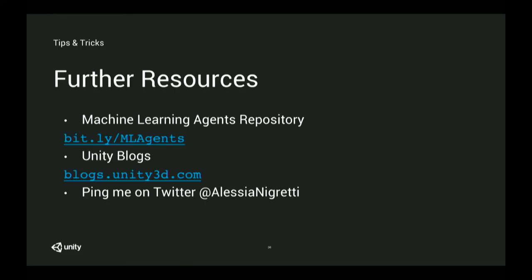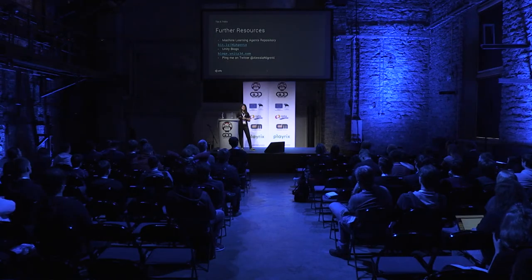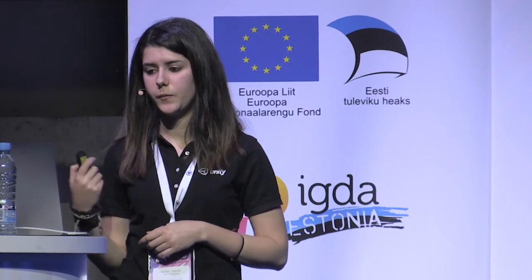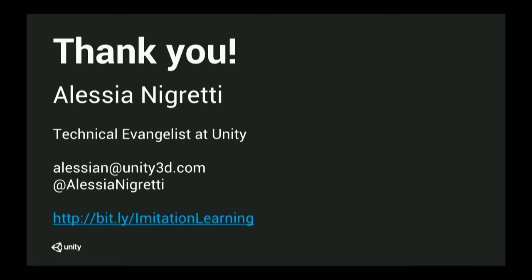For resources: the machine learning agents repository on GitHub is where you get it now — it's still in beta, but will eventually be on the Asset Store. The Unity blogs post all updates, and there's a dedicated AI section on the website. You can also ping me on Twitter. There's a feedback link at the end of the slides, with a prize draw in about a week — fill the form for a chance to win T-shirts, notepads, and stress balls. Any questions?